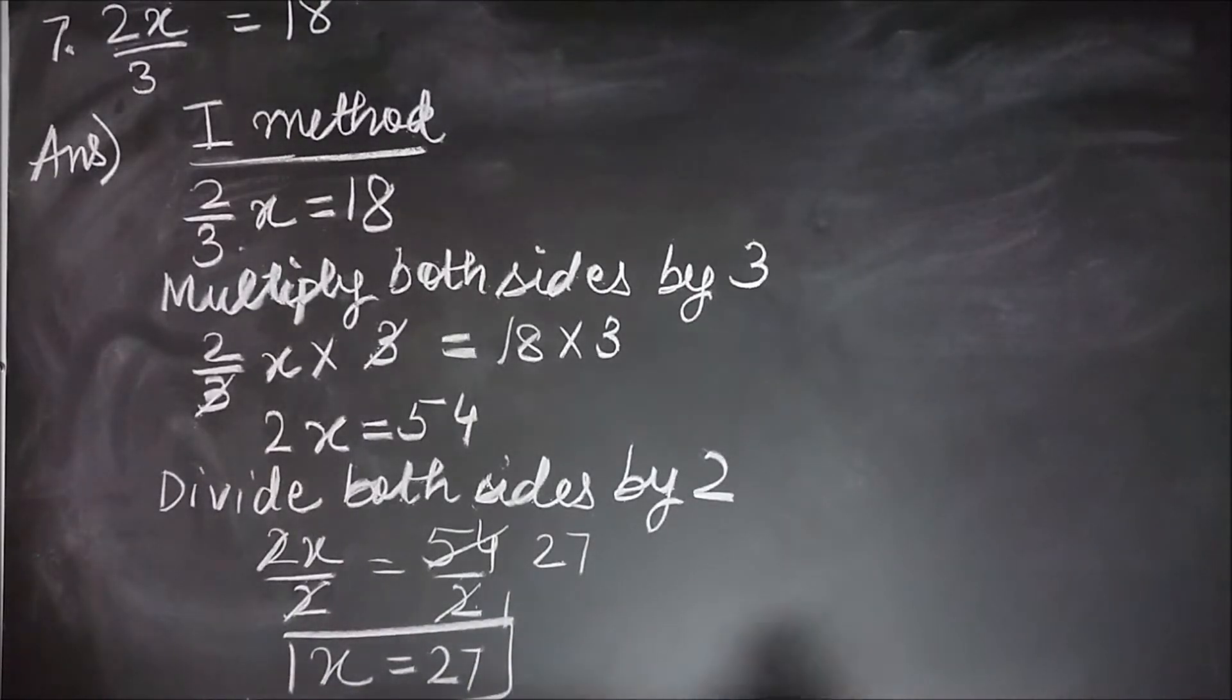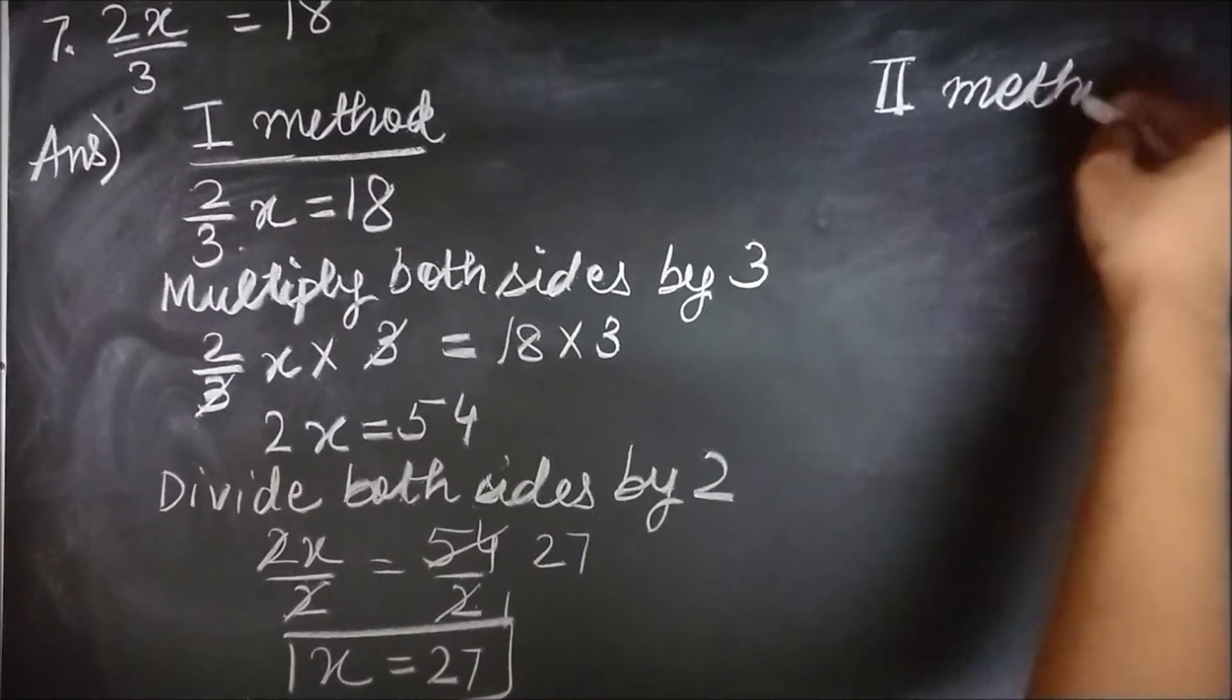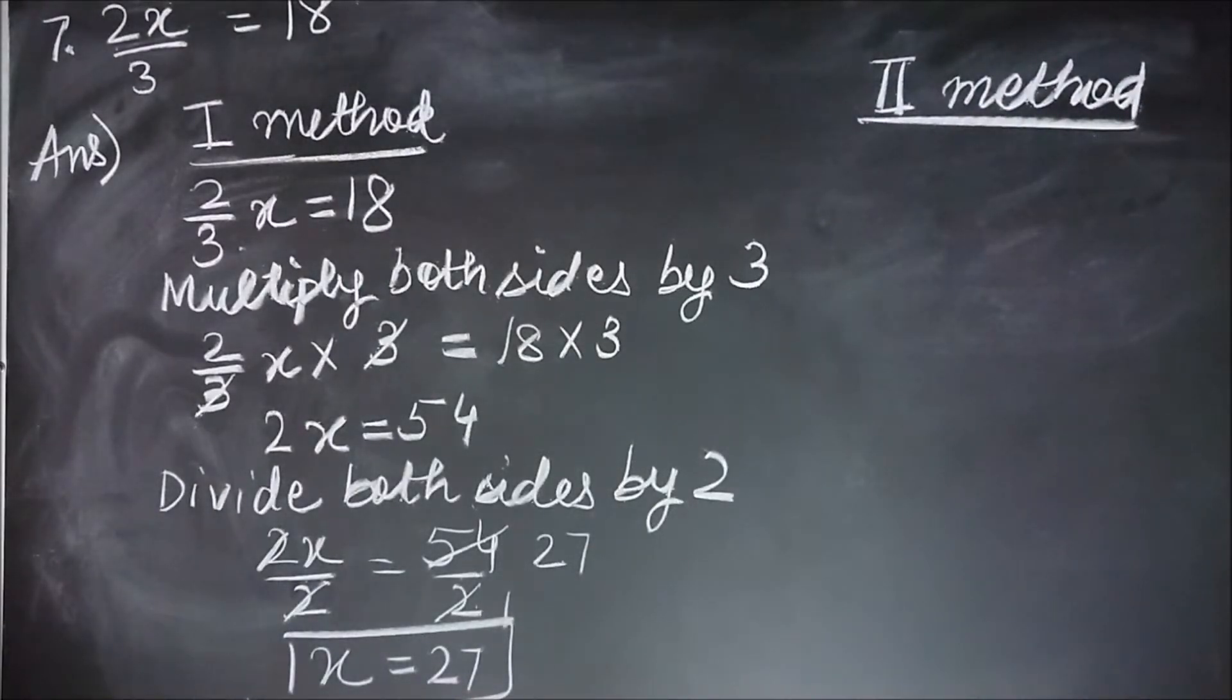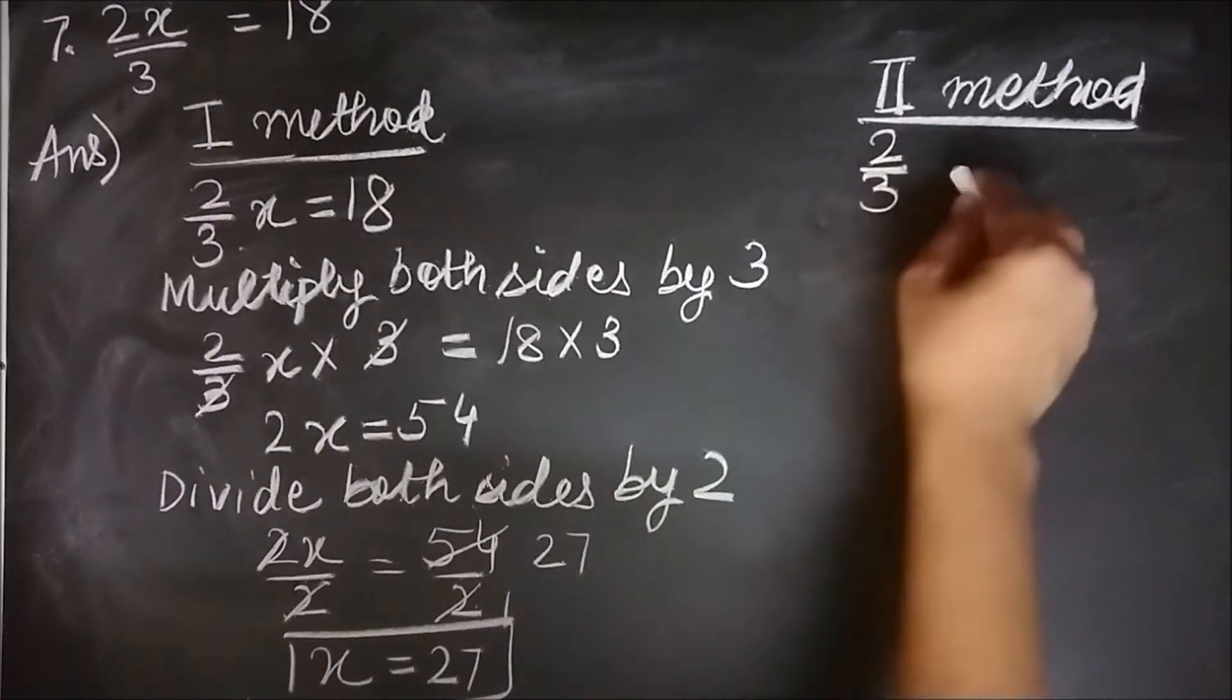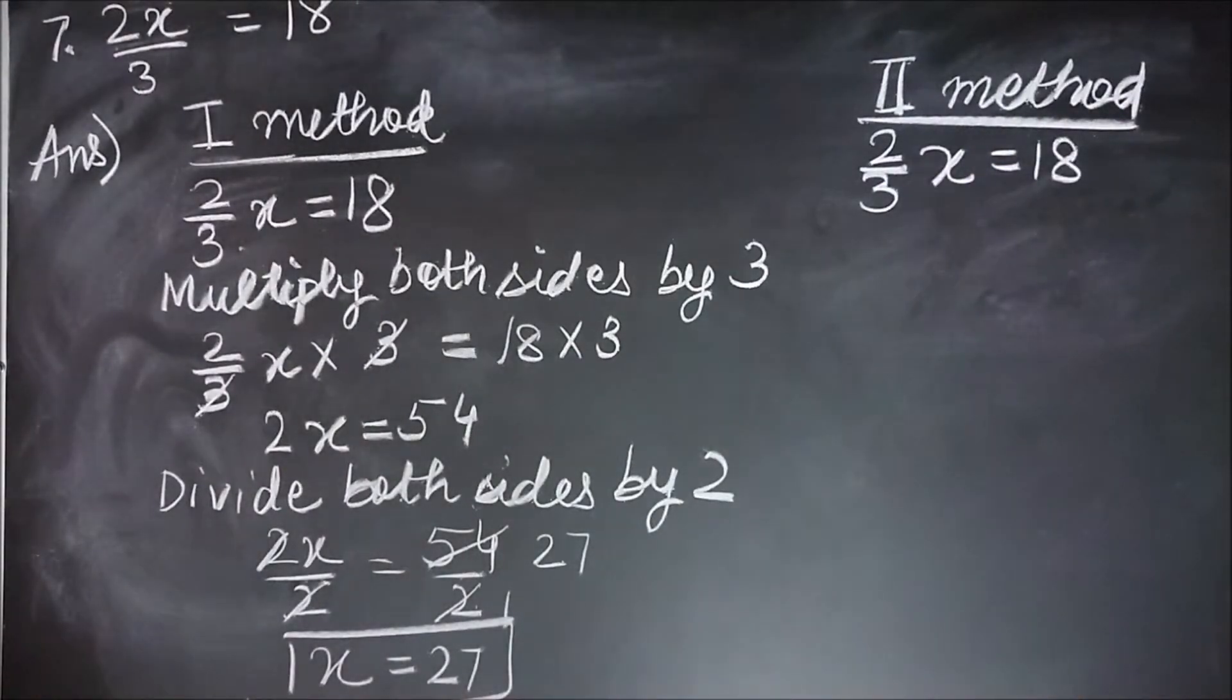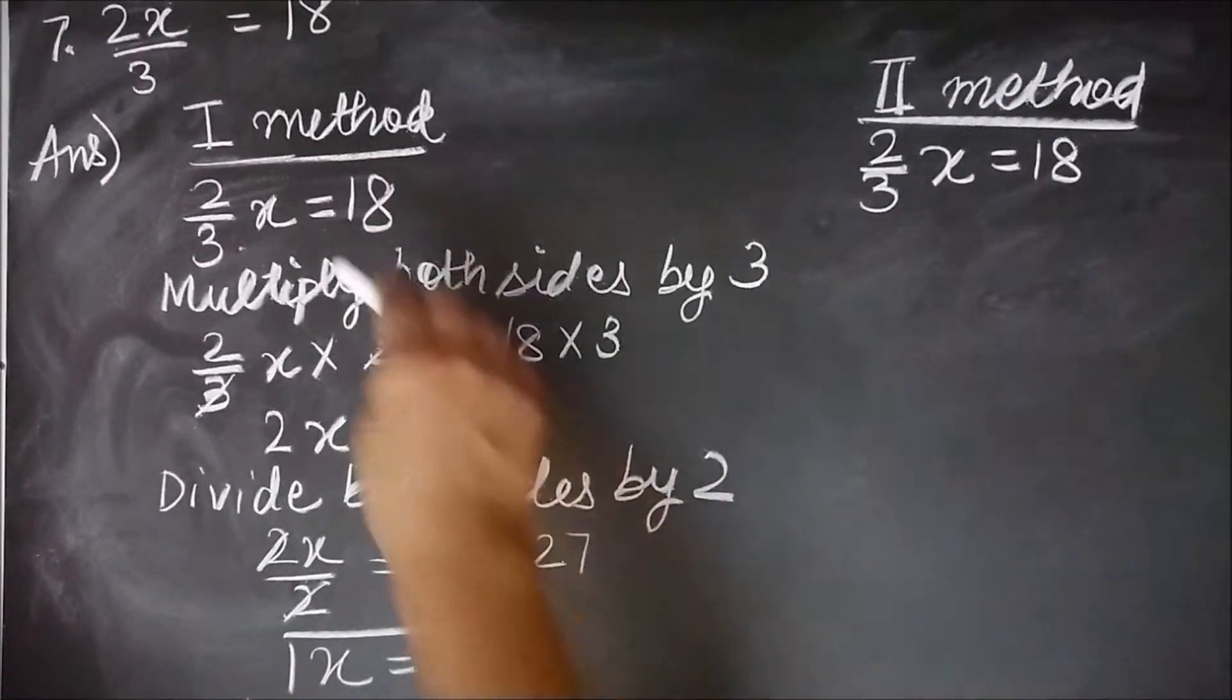Let us see the second method. In the second method, we are just going to skip some of the steps from the first method. My equation was 2 by 3x equal to 18. I need to move my constants to the right hand side.